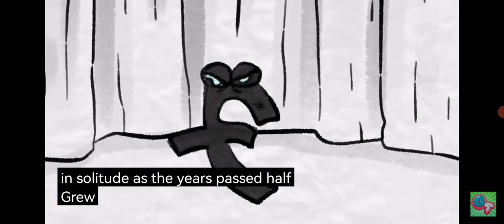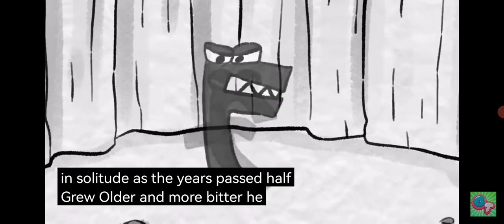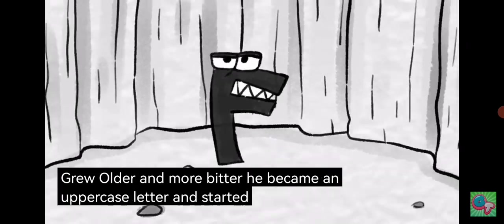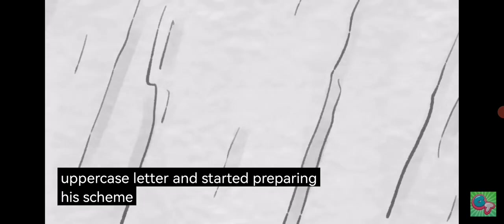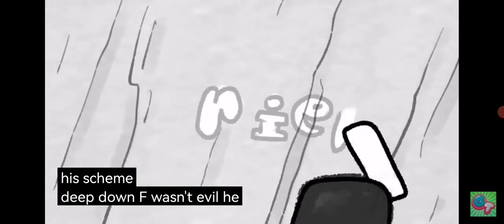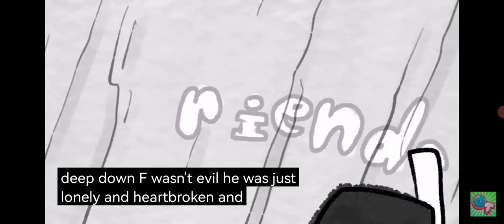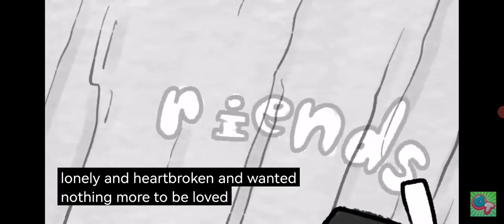As the years passed, F grew older and more bitter. He became an uppercase letter and started preparing his scheme. Deep down, F wasn't evil. He was just lonely and heartbroken, and wanted nothing more than to be loved once again by his old friends.